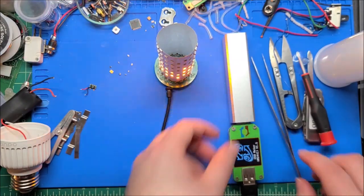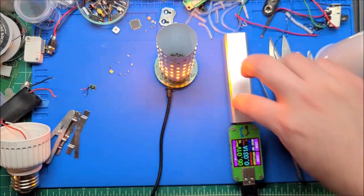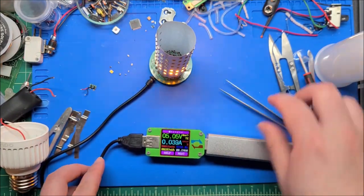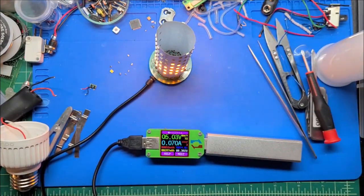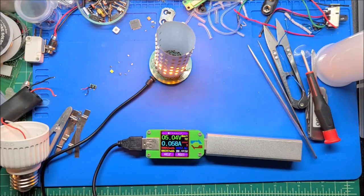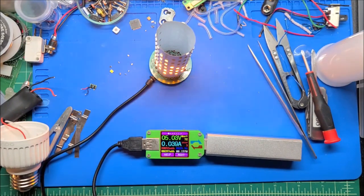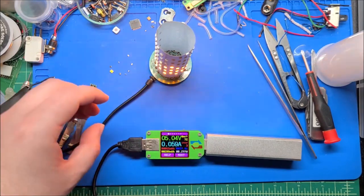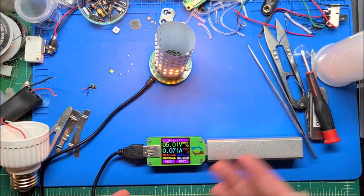So here we go. Fire. And this is drawing, it's jumping around anywhere from like 40 to peak, I'm seeing about 90. So about 40 to 90 milliamps. On average, it's about 50.